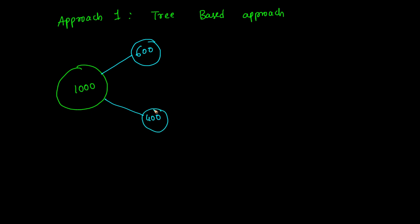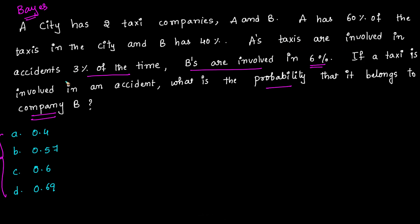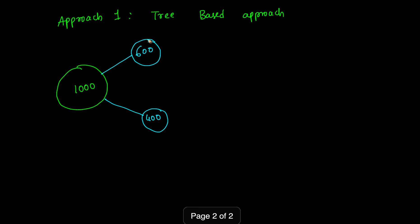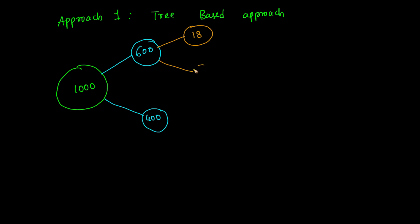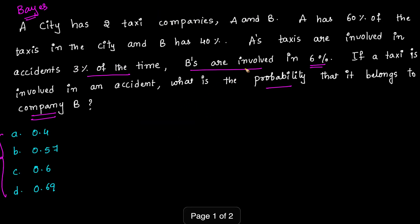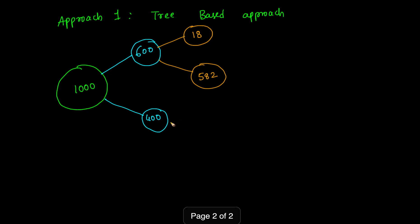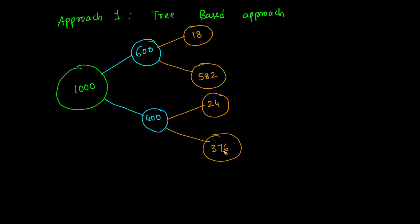Company A's taxis are involved in an accident 3% of the time, so 3% of 600 means 18 cars have been involved in an accident and the remaining 582 have not. Similarly for company B, 6% of 400 means 24 cars have been involved in an accident and the remaining 376 have not.